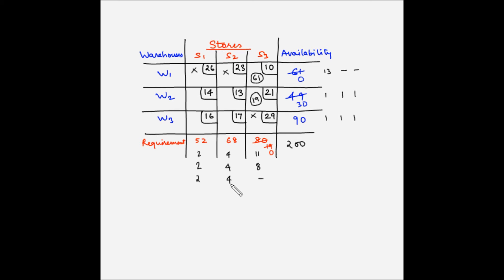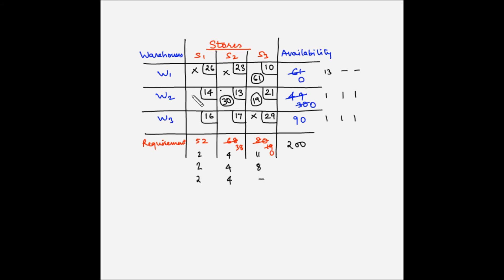We allocate the maximum units to the square with the lowest cost in the second column, which is W2S2. The supply availability at W2 is 30 units while the demand at S2 is 68 units, so the maximum we can allocate is 30 units. With this allocation, the supply at W2 becomes 0 and the demand at S2 becomes 68 minus 30 = 38 units. Since W2's supply is fully allocated, we cross off W2.